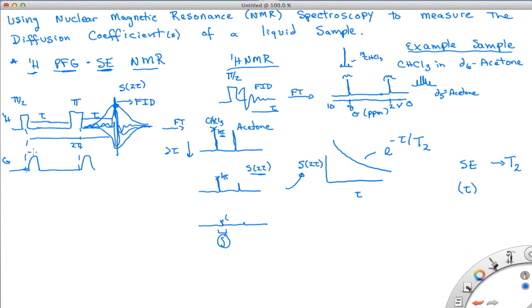And we can adjust the time of that gradient, and that's small delta, and these are usually the same exact, so small delta, and we can make the amplitude smaller or bigger of these. So we can change the amplitude of those, and then the time between these we'll call big delta.